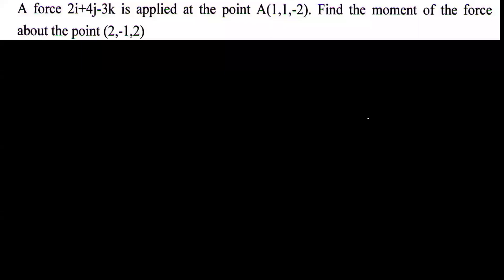A force 2i plus 4j minus 3k is applied at the point A(1, 1, -2). Find the moment of force about the point B(2, -1, 2).